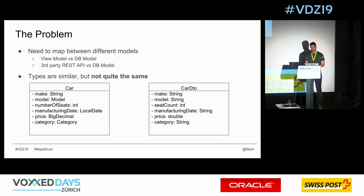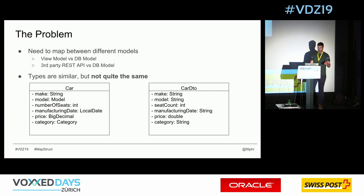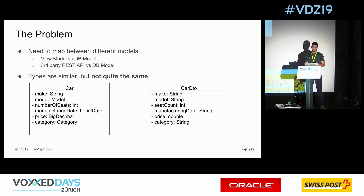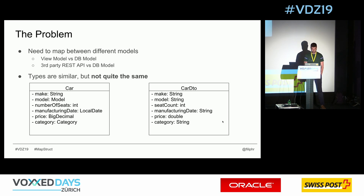Before I introduce MapStruct, let's first go into the problem that we try to solve. With more and more microservices architectures, you have different APIs — third-party APIs which have certain representations and models — and then you have your own DB model, and you're doing these mappings constantly between them. So it's a view model versus a DB model or third-party REST API. Most of the time the types can be similar, but they're not quite the same.